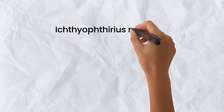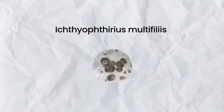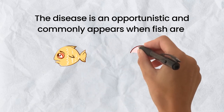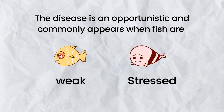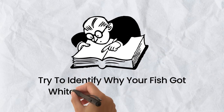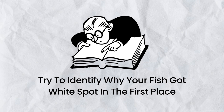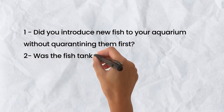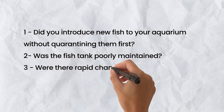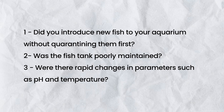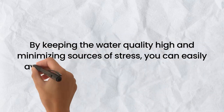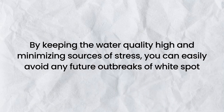Ichthyophtherius multifilius is a relatively large single-celled ciliated protozoan that causes Ich, or white spot disease. The disease is opportunistic and commonly appears when fish are weak or stressed, so try to identify why your fish got white spot in the first place. Did you introduce new fish without quarantining them? Were there rapid changes in pH or temperature? By keeping water quality high and minimizing stress, you can easily avoid future outbreaks.